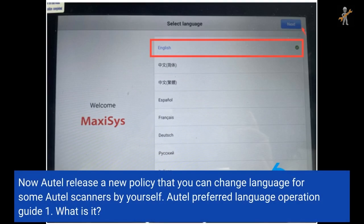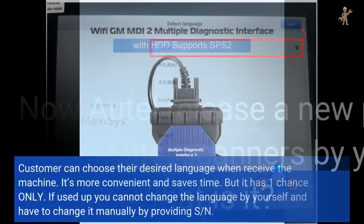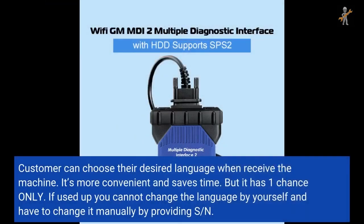Auto Preferred Language Operation Guide. What is it? Customers can choose their desired language when they receive the machine. It's more convenient and saves time. But it has one chance only — if used up, you cannot change the language by yourself and have to change it manually by providing your serial number.